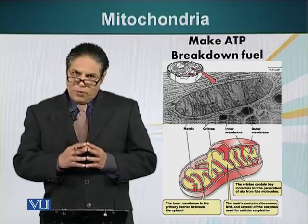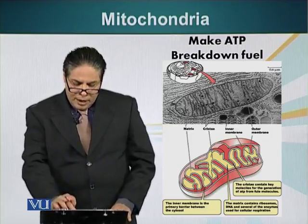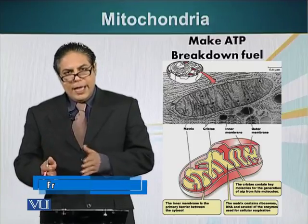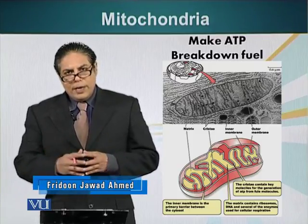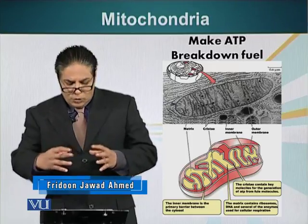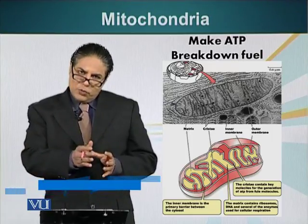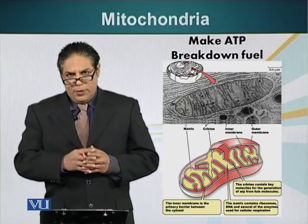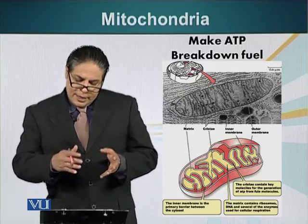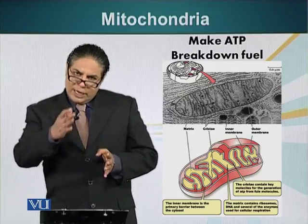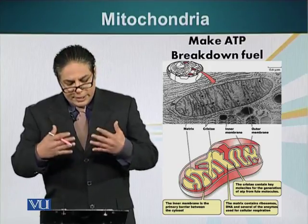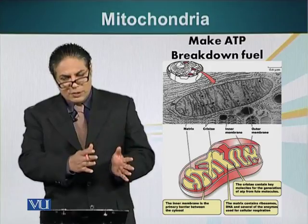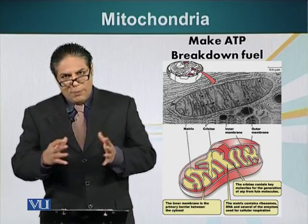Let's look at the structure of mitochondria first. Mitochondria are also a double membranous structure. They have an outer membrane and an inner membrane. The outer membrane is not very selective — most materials can pass through it. The inner membrane of mitochondria is folded and forms structures like little shells.